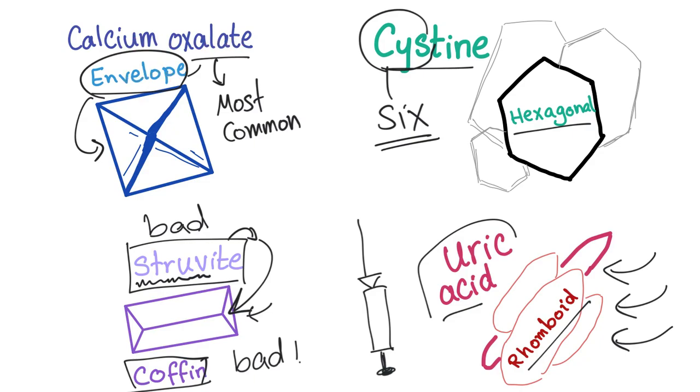Envelope, calcium oxalate. Hexagonal, cysteine. Coffin-shaped struvite stones, the evil one. Rhomboid-shaped uric acid. I hope it's simple, because it is. Now it is.